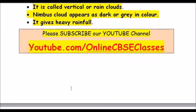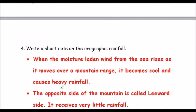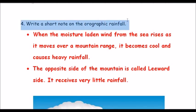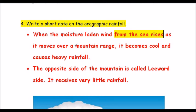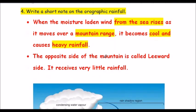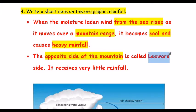Question four: Write a short note on orographic rainfall. When moisture-laden wind from the sea rises as it moves over a mountain range, it becomes cool and causes heavy rainfall. The opposite side of the mountain is called the leeward side, and it receives very little rainfall.